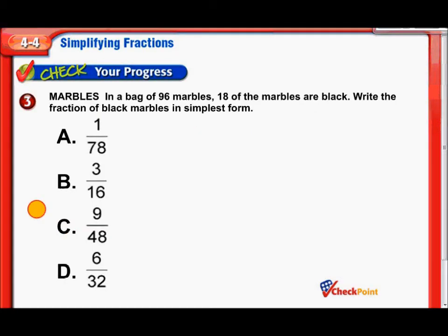In a bag of 96 marbles, 18 of them are black. Write the fraction of black marbles in simplest form. So we have our 18. We have our 96. Now we need to start thinking about which numbers would divide into 18 and 96. How about this? Let's cut those numbers in half first. Let's divide them each by 2. Half of 18 is 9. And half of 96 is 48.